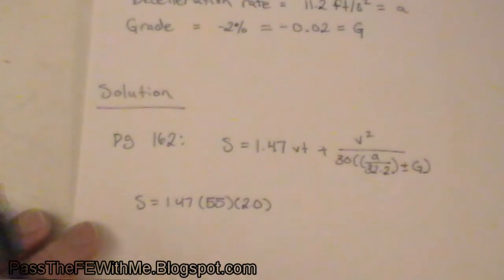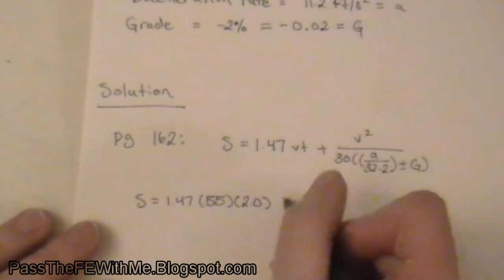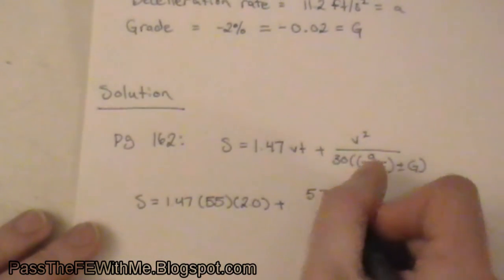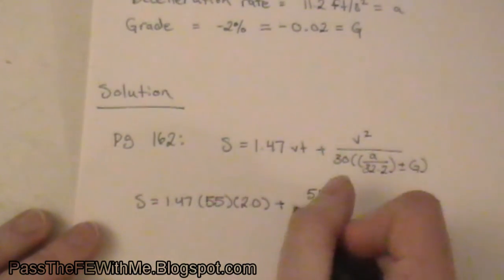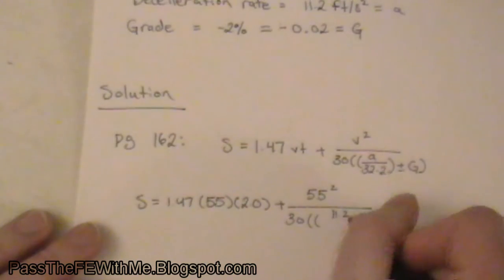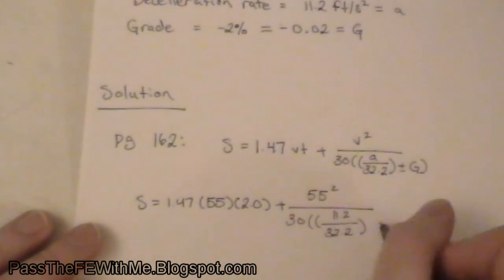Otherwise you have to convert them, but don't try and make everything in feet and seconds. So, okay, plus our velocity again squared, 55 squared, that's our design speed, 30 times 11.2, 32.2, plus minus 0.02.